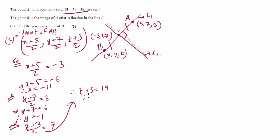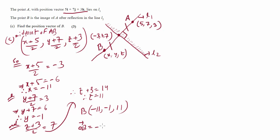So the coordinates of B are minus 11, minus 1, and 11. The position vector of B is minus 11I minus J plus 11K.